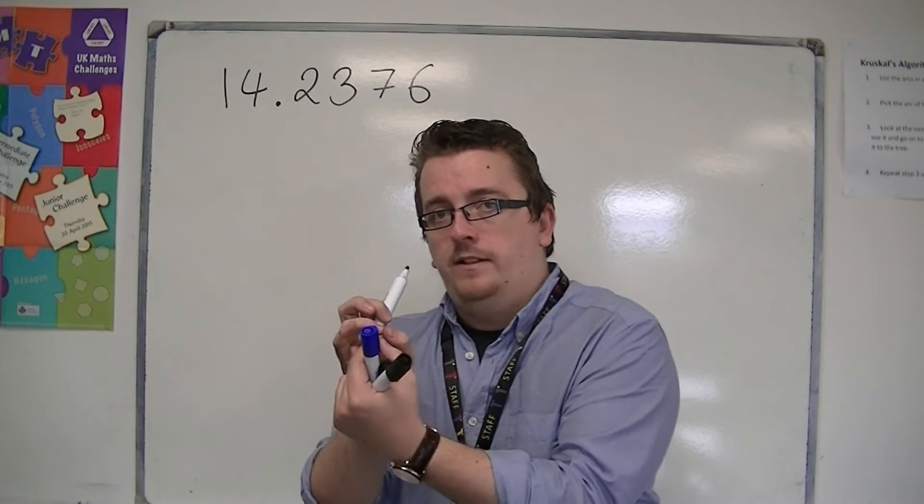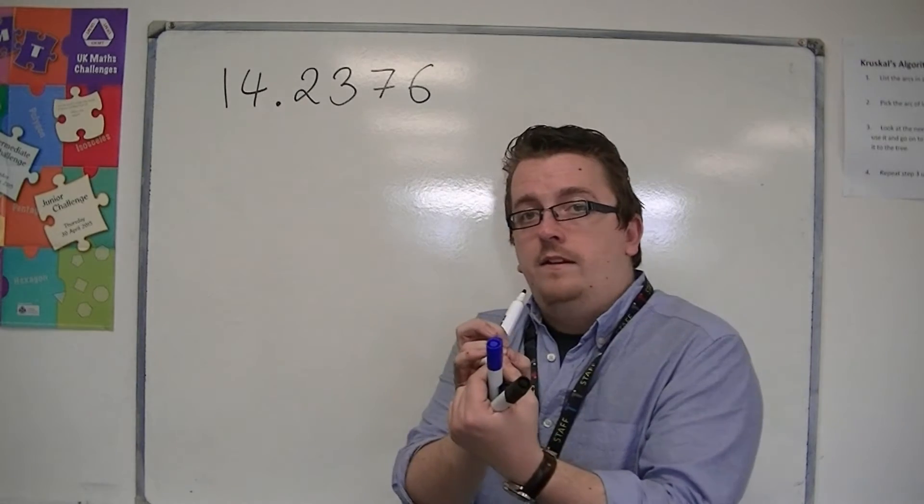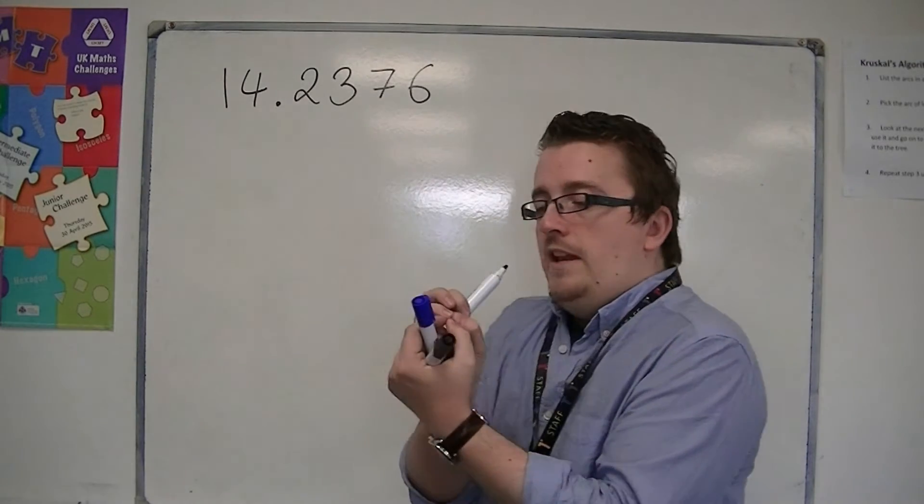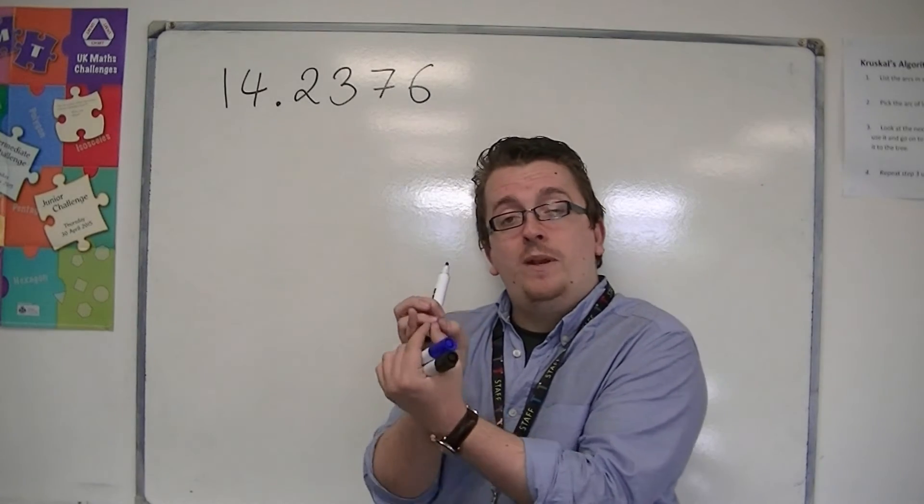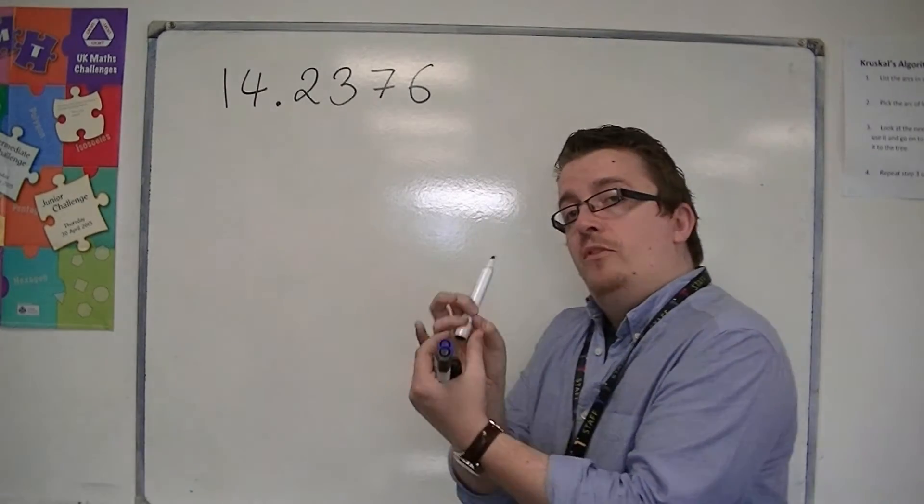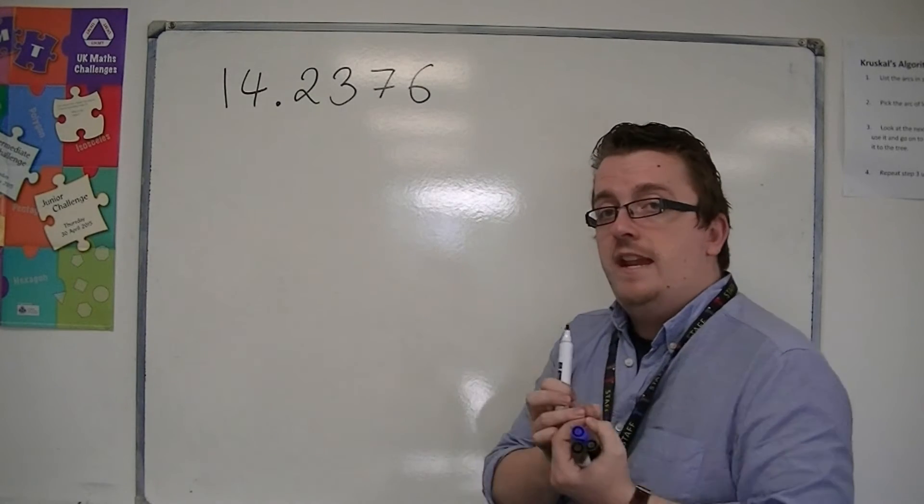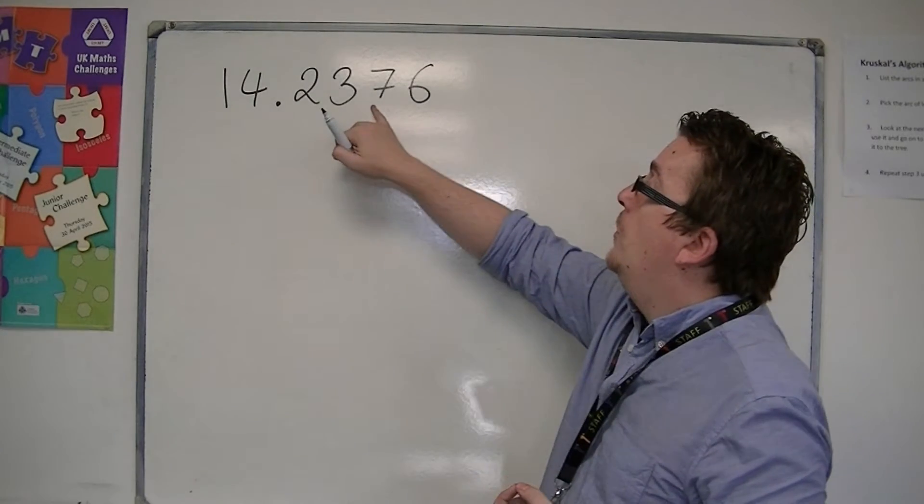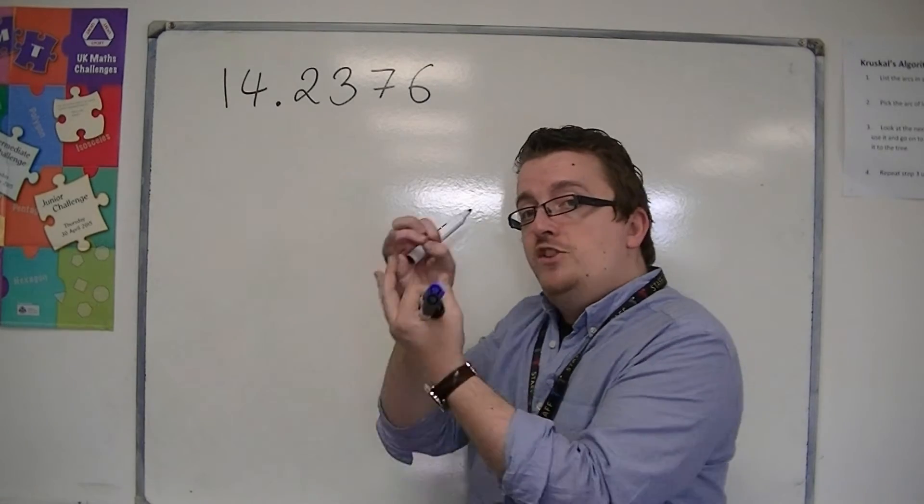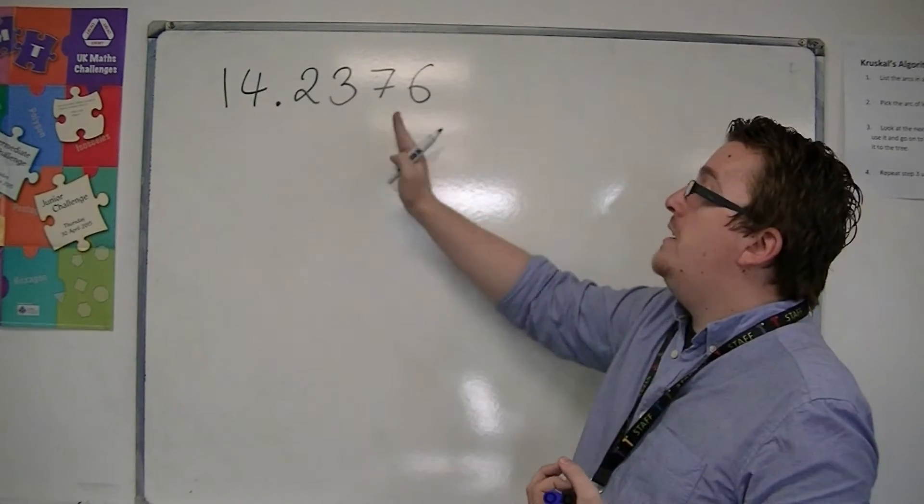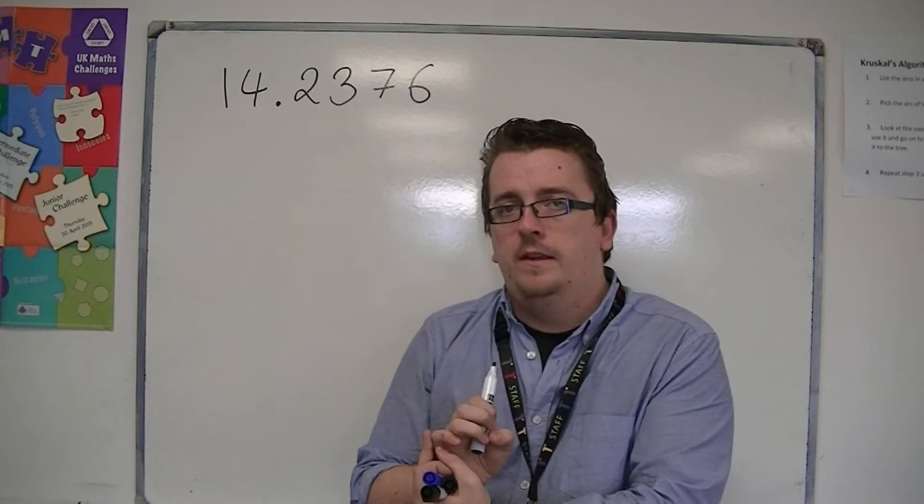And then the millimeter is split up again into an even smaller unit of measure. So there are 10 units between each millimeter, and between each of those is another 10 bits. So I've got 7 bits between those, and I'm going into ever-increasing degrees of accuracy.